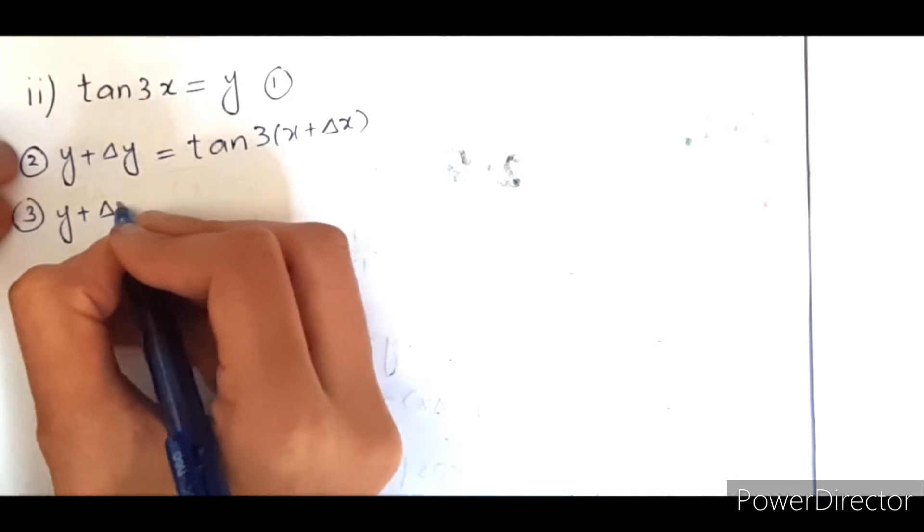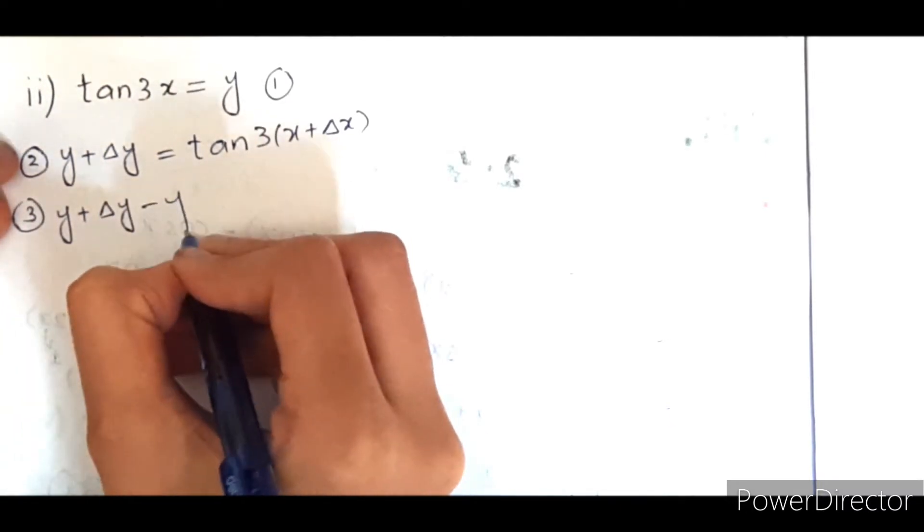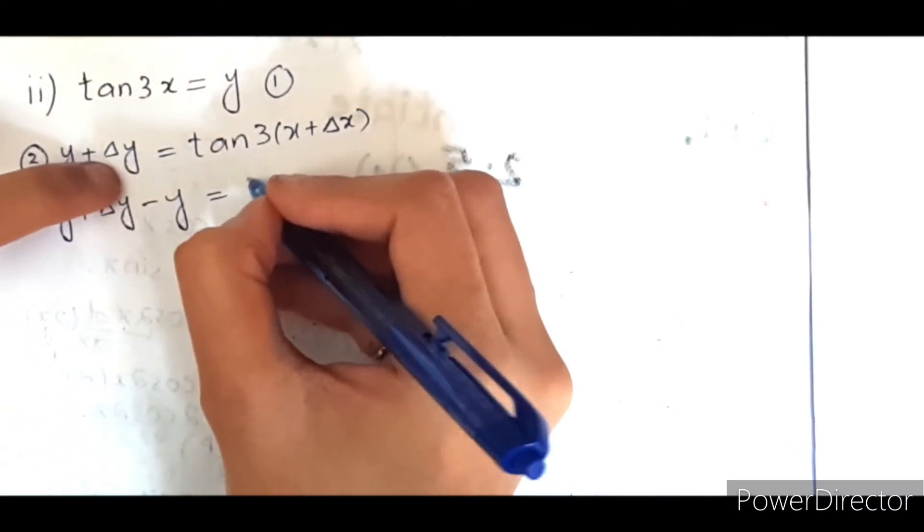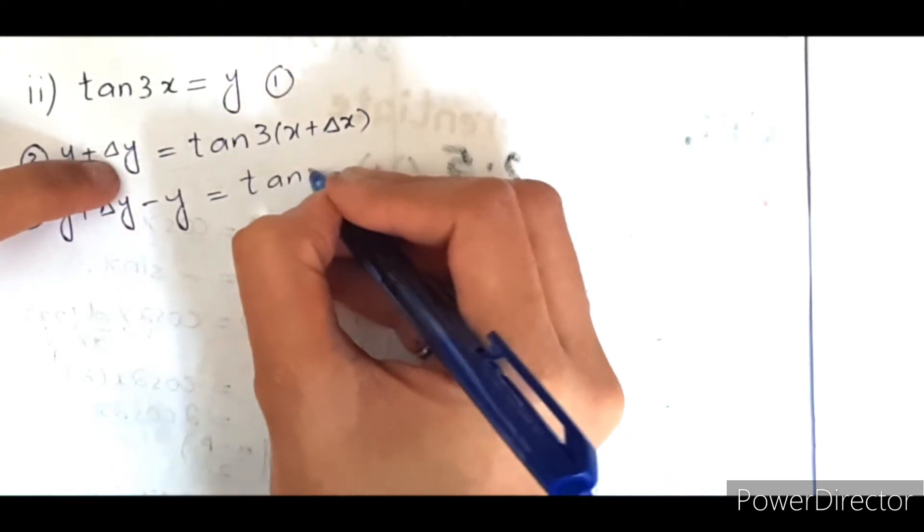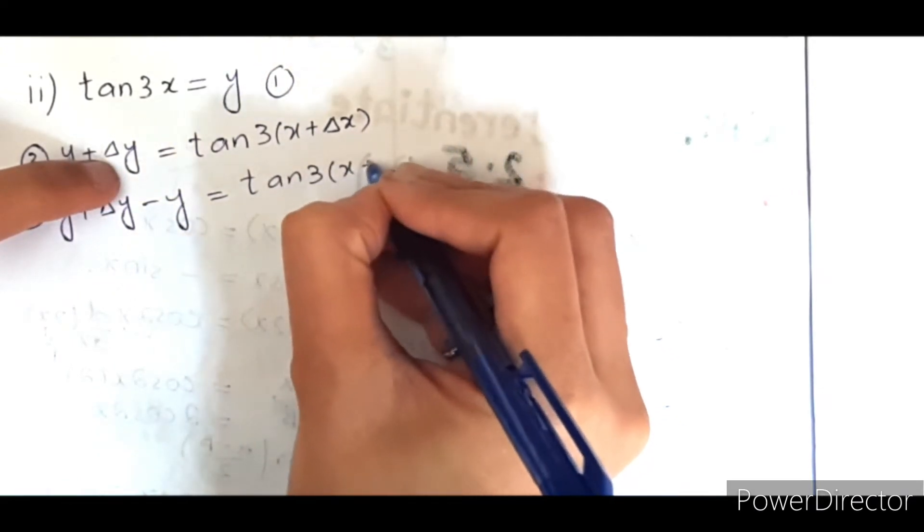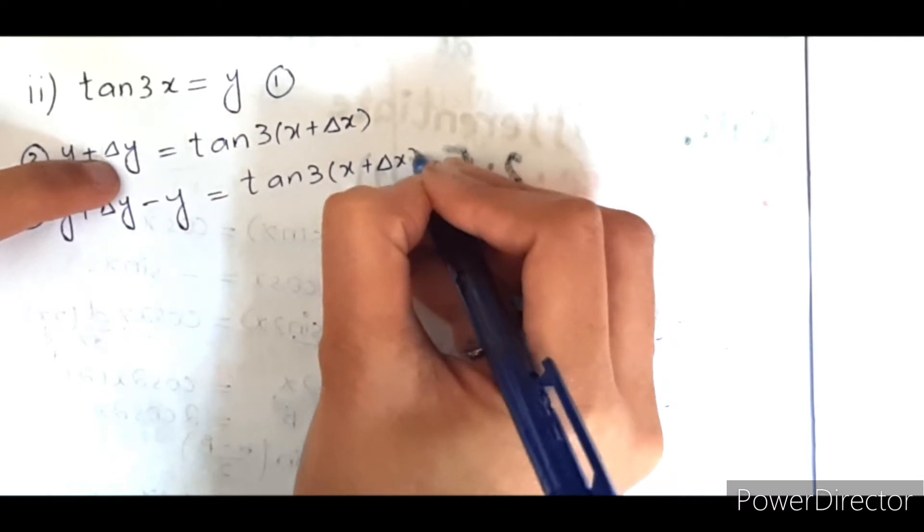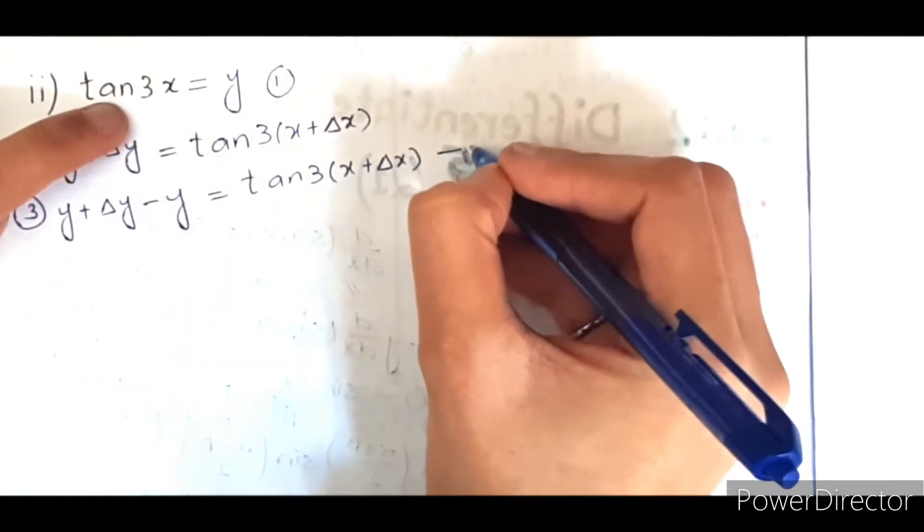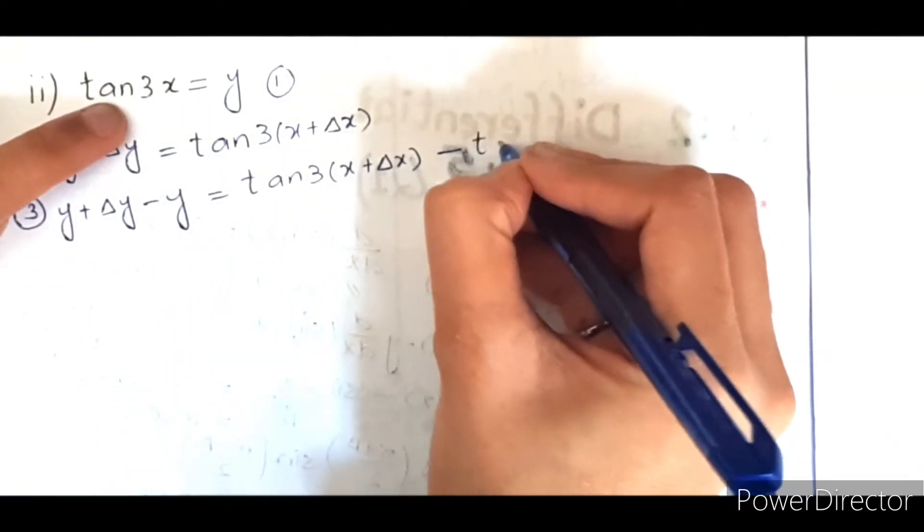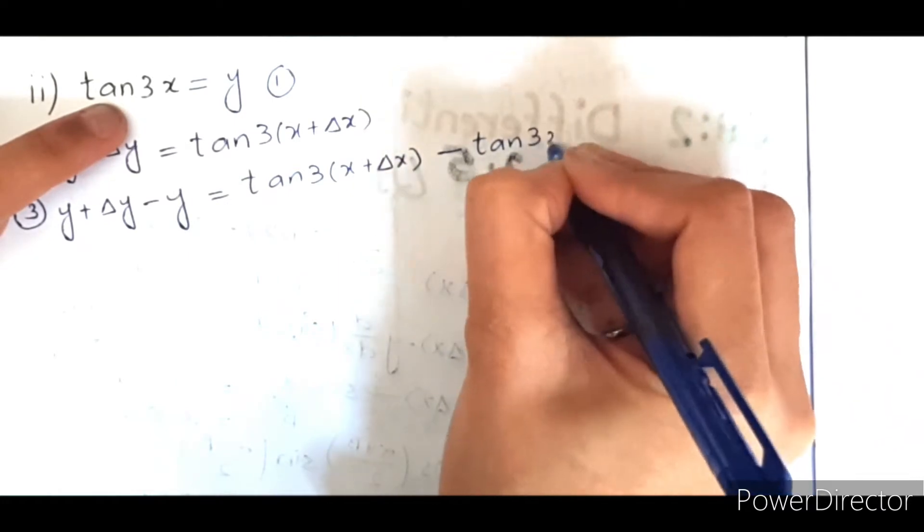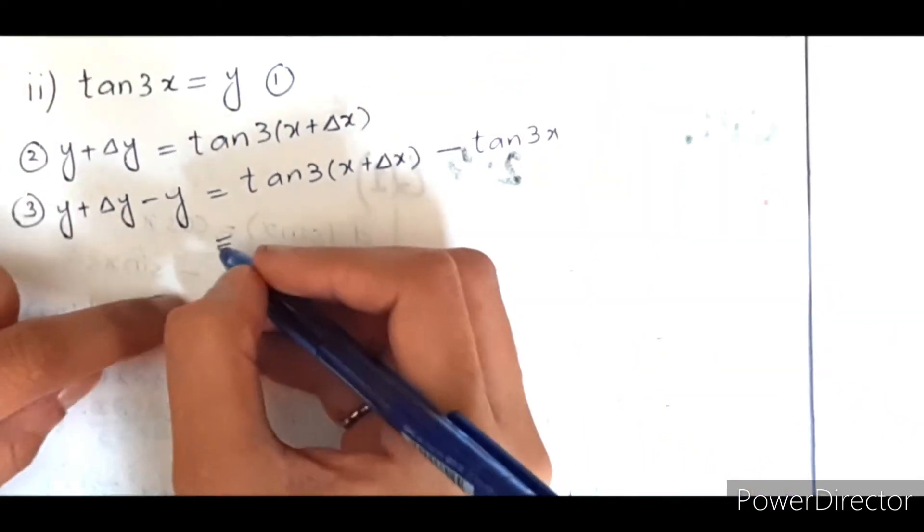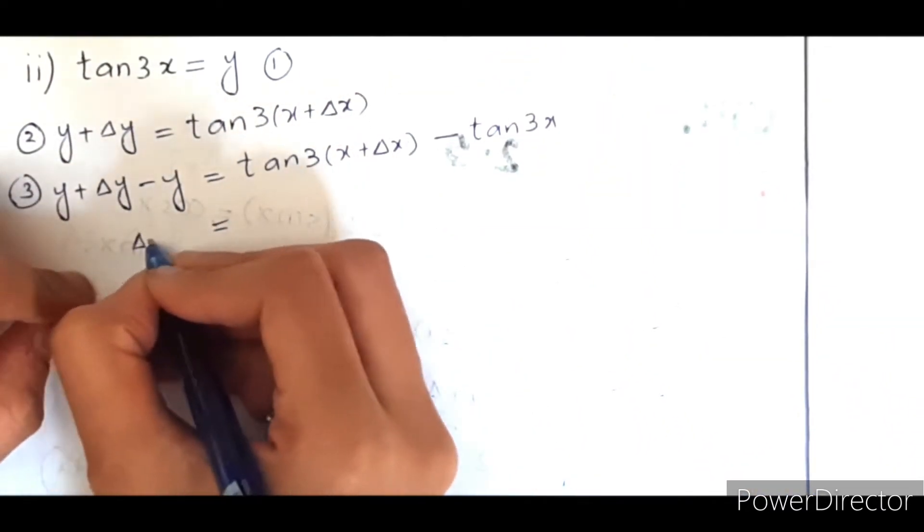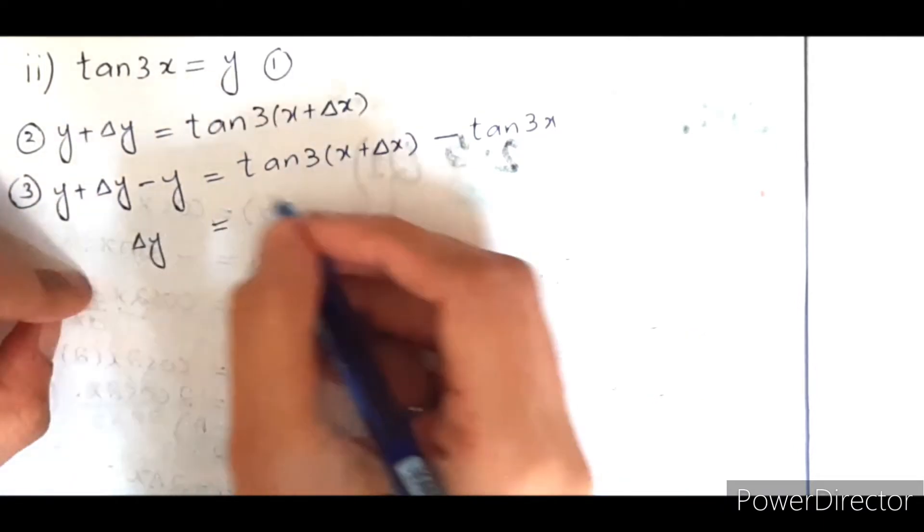Then subtracting y from the second equation will be tangent 3x plus del x minus the value of y, which is tangent 3x. Now here will be del y because negative and positive y are canceled out.